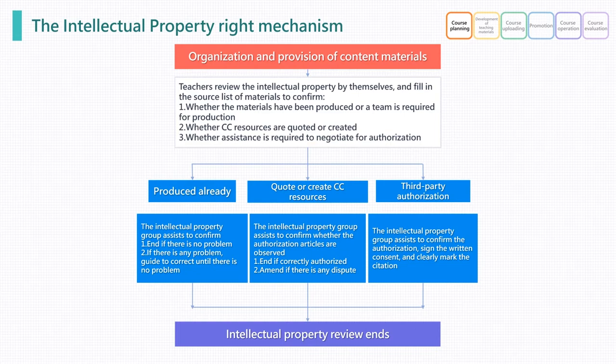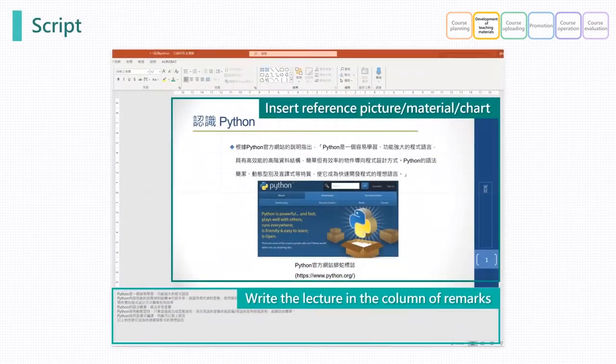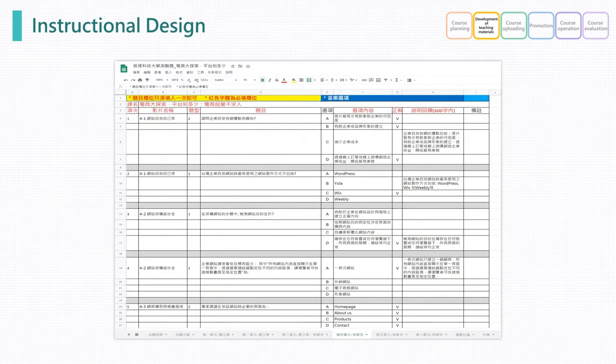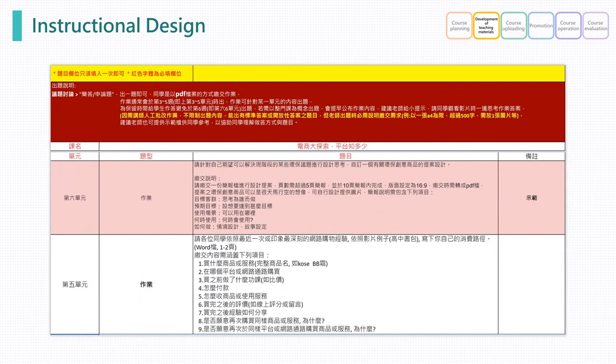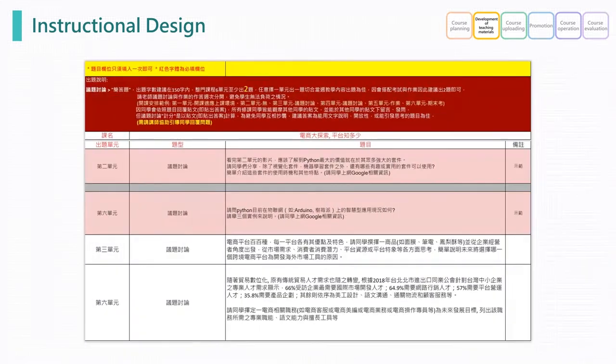The intellectual property right mechanism is shown in the figures. After confirming the course structure and the contents of teaching materials, we ask the lecturer to provide the script. Team members assist the lecturer to modify the draft for recording to make the sentences more natural and smooth. When the lecturer is writing the script, we also ask the lecturer to plan the teaching activity design to understand students' learning status and deepen the learning impression.